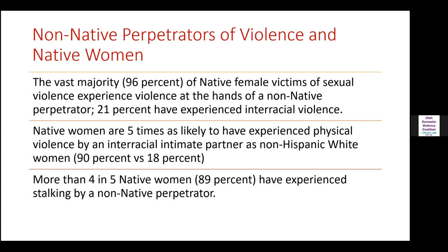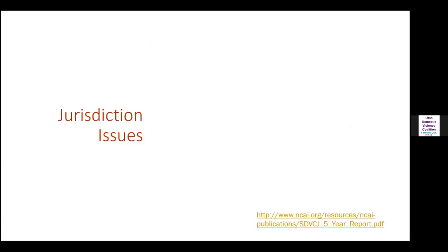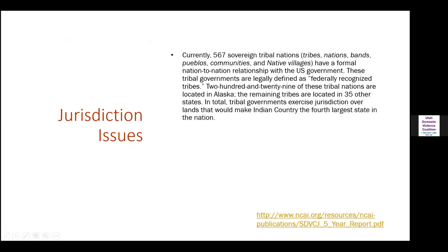When it comes to who is perpetrating violence against Native American women in particular, the vast majority of victims of sexual violence have non-Native perpetrators. 21% of Native American women have experienced interracial violence. Native American women are five times as likely to have experienced physical violence by an interracial intimate partner. And more than four in five Native women — 89% — have experienced stalking by a non-Native perpetrator. People may have the perception that violence against Native American women is perpetrated by Native people, but overwhelmingly it's non-Native perpetrators.